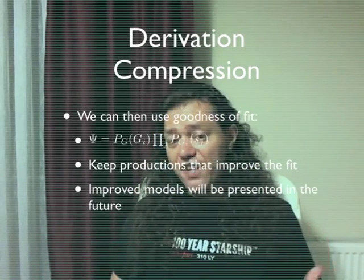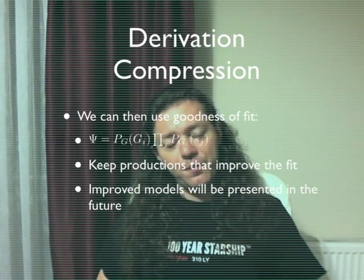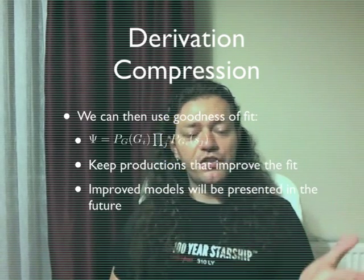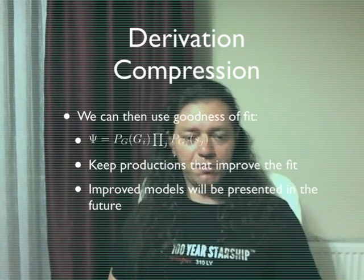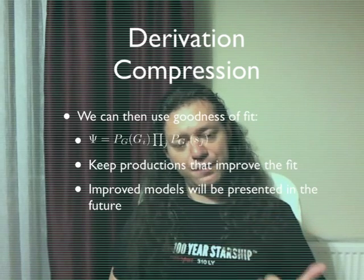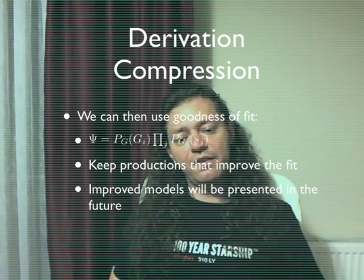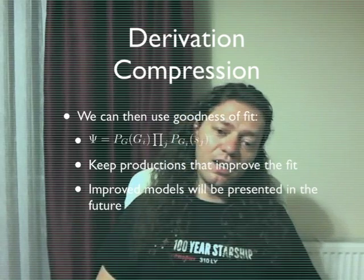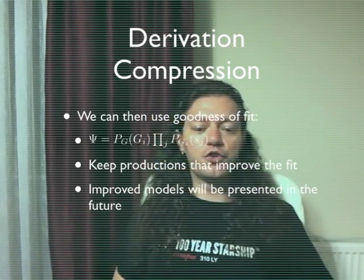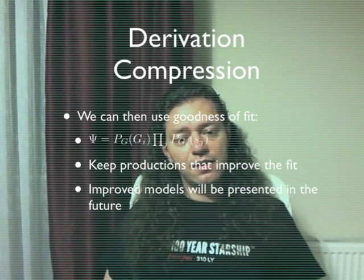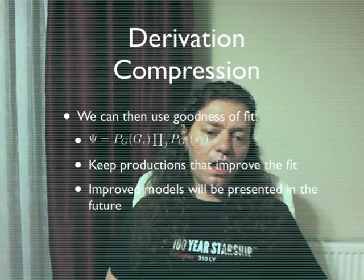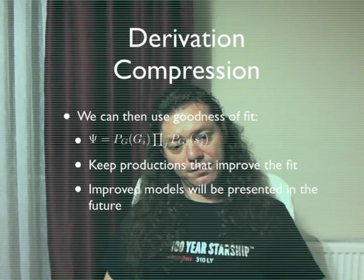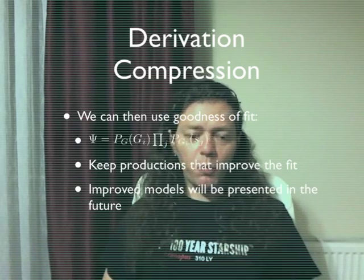We can then use the goodness of fit, which is psi equals P(G|GI) — the a priori probability of the grammar given by the extended model — times how well that grammar works with your solution programs. We use productions that improve the fit. Improved models will be presented in the future.